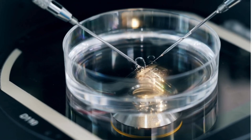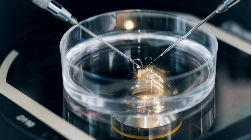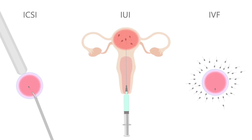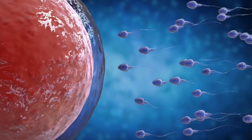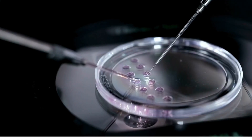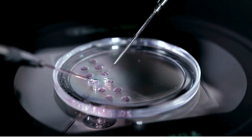During the next step of IVF called fertilization, the collected eggs will be taken immediately to a laboratory where they will be fertilized. Fertilization may be performed by insemination, where healthy sperm cells are injected directly into the uterus, or the sperm are allowed to freely swim and fertilize the eggs, or the eggs may be fertilized with sperm injected directly into them during a process called intracytoplasmic sperm injection.